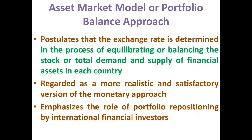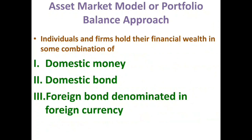The model emphasizes the role of portfolio repositioning by international financial investors as well. One of the simplest asset market models argues that individuals and firms hold their financial wealth in a combination of three financial assets: namely domestic money, domestic bond, and foreign bond which is denominated in foreign currency. The motive for holding domestic money is obviously to carry out day-to-day business transactions. Though holding of domestic money is riskless, it provides no interest or yield. Thus, the opportunity cost of holding domestic money is the interest earnings forgone by not holding either domestic or foreign bond.